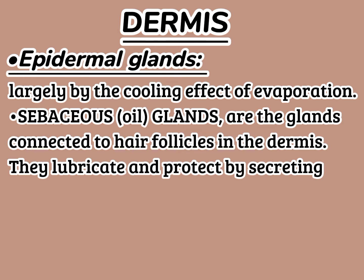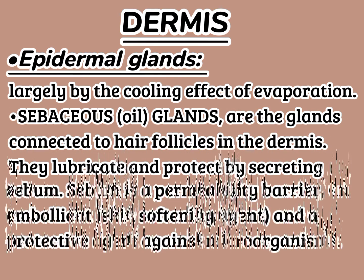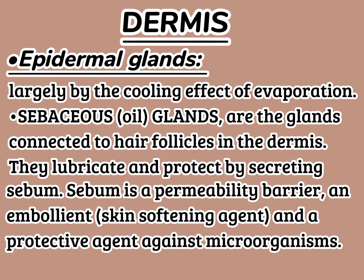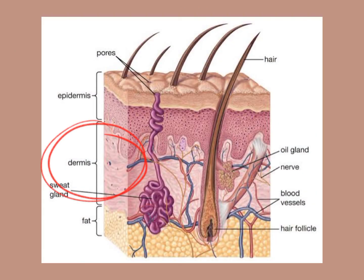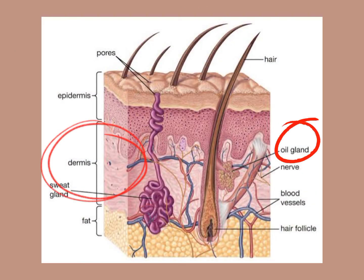Sebaceous oil glands are the glands connected to hair follicles in the dermis. They lubricate and protect the skin by secreting sebum. Sebum is a permeability barrier, an emollient, and a protective agent against microorganisms.